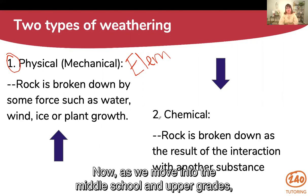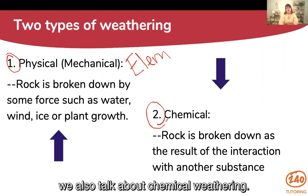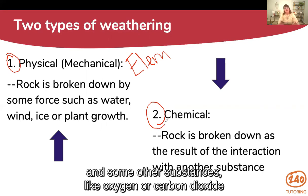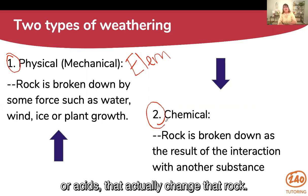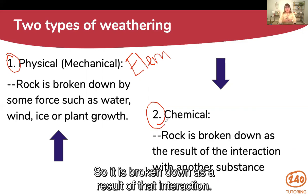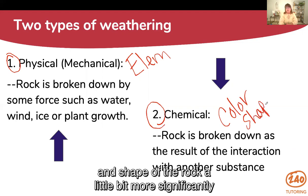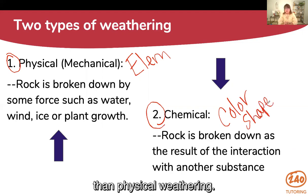As we move into the middle school and upper grades, we also talk about chemical weathering. This is where we have a reaction between the rock and some other substances like oxygen, carbon dioxide, or acids that actually change that rock, breaking it down as a result of that interaction. Chemical weathering can actually change the color and shape of the rock more significantly than physical weathering. So there are your two types.